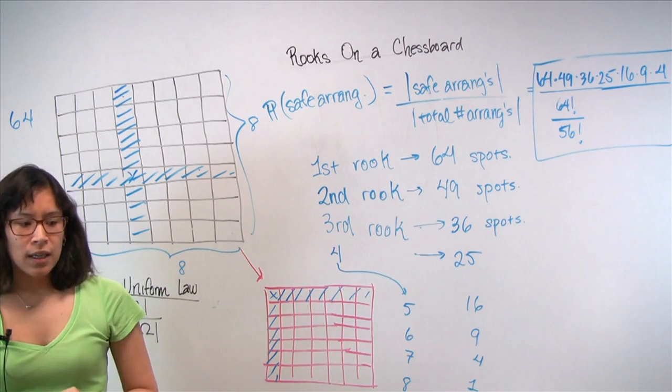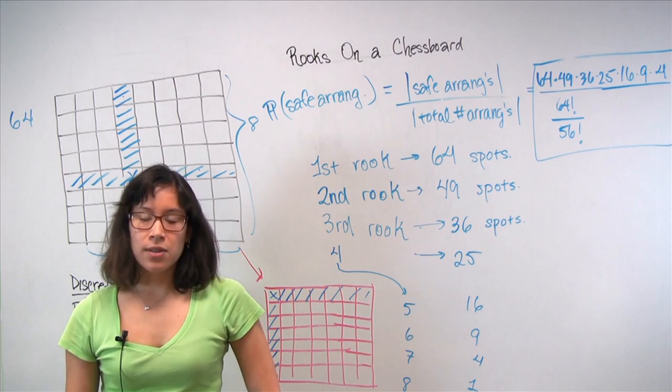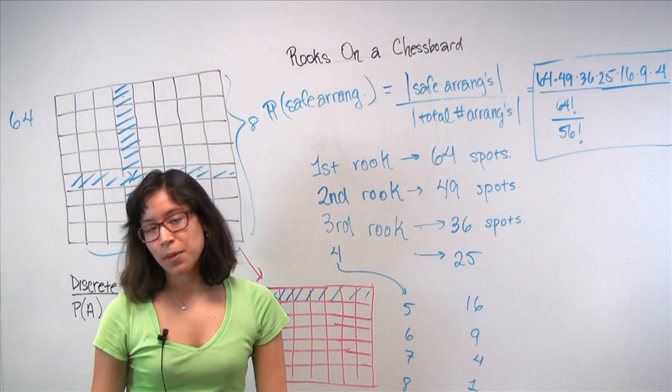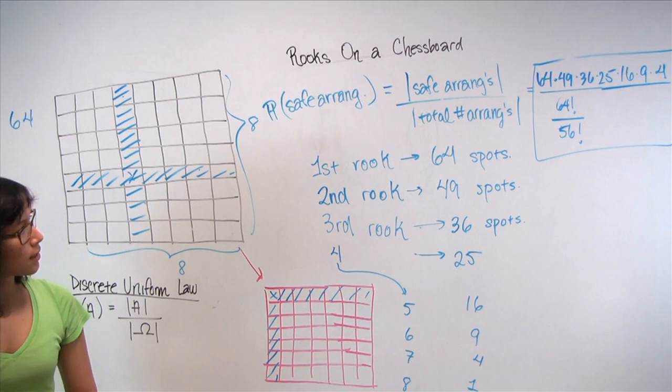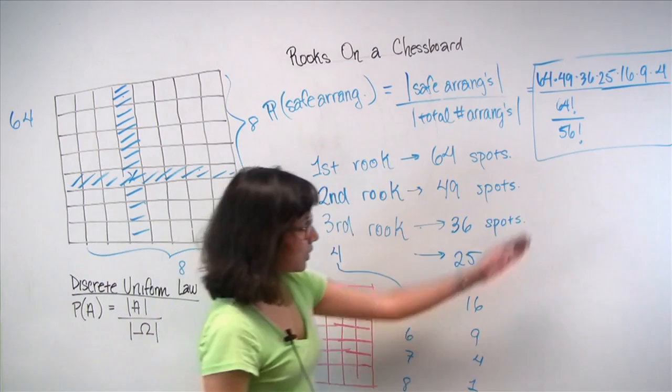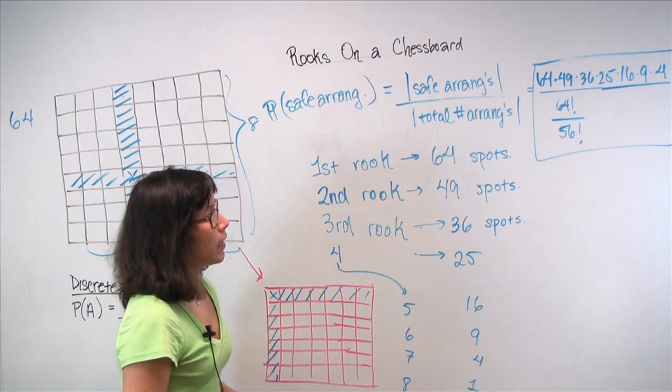We invoke the counting principle again. To get the total number of safe arrangements, we multiply these numbers together: 64 times 49 times 36 times 25 times 16 times 9 times 4. This is our answer. I really like this problem because we don't normally ask you to think about different spatial arrangements. The thing that we used is the discrete uniform law and the counting principle, which we used twice - once to compute the numerator, once to compute the denominator.